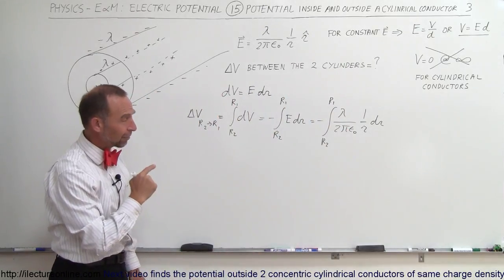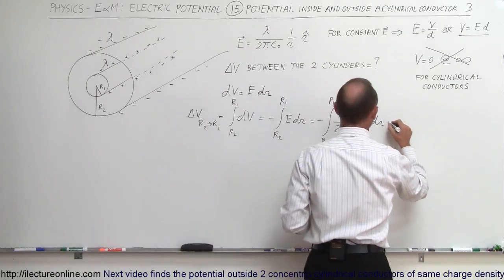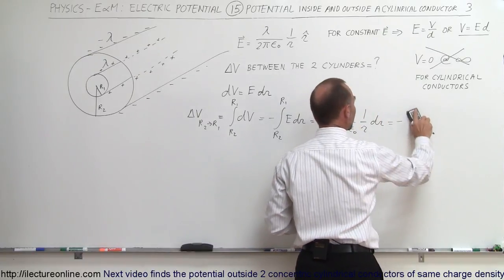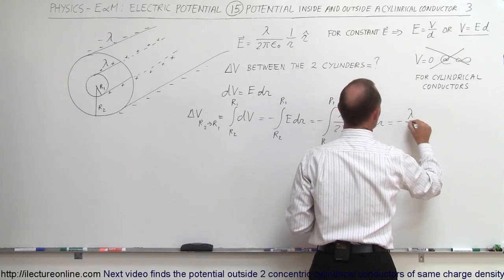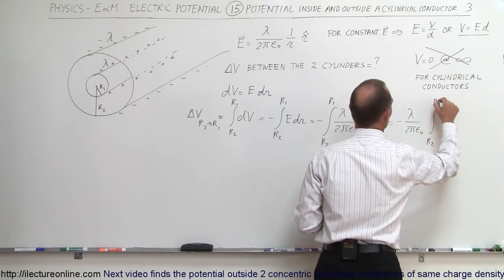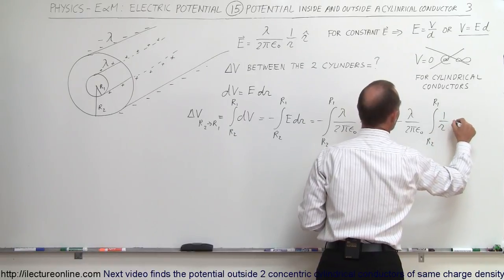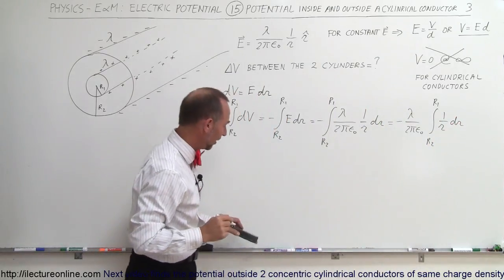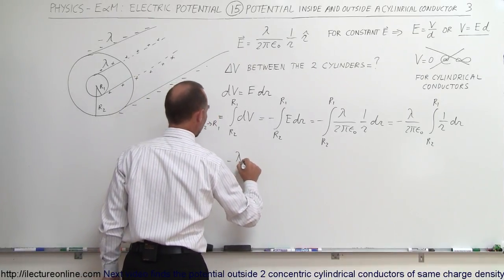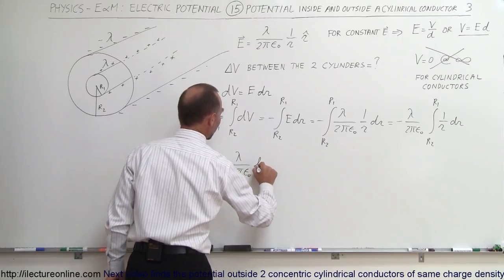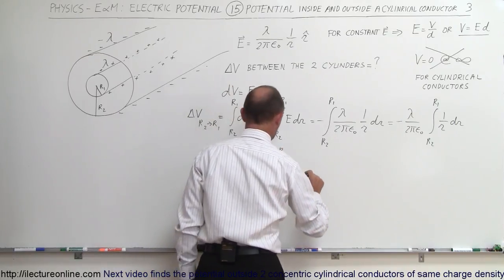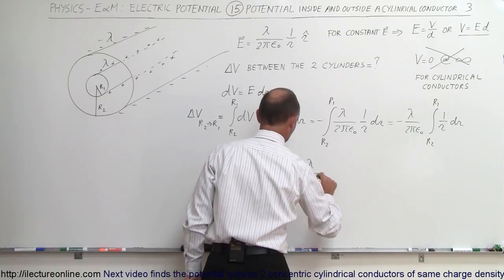Since lambda divided by 2 pi epsilon-naught is a constant, this becomes minus lambda divided by 2 pi epsilon-naught times the integral from R2 to R1 of 1/r dr. We know that integral is the natural log of r, so this equals minus lambda divided by 2 pi epsilon-naught times the natural log of r evaluated from R2 to R1.